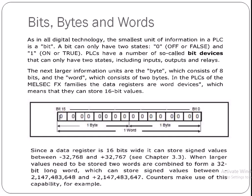Bit is the smallest unit of information in a PLC. A bit has two states: zero for off and one for the on state, true or false.